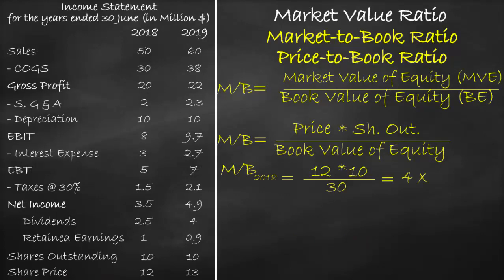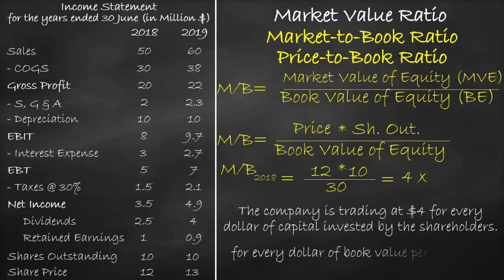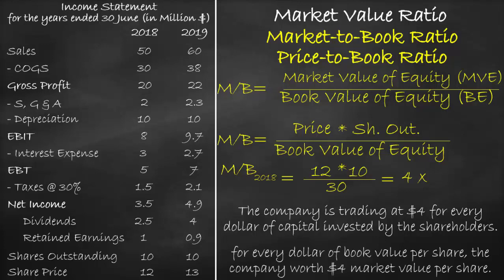The unit of the market to book ratio is times. This means that the company is trading at $4 for every dollar of capital invested by the shareholder. This also means that for every dollar of book value per share, the company is worth $4 of market value per share.